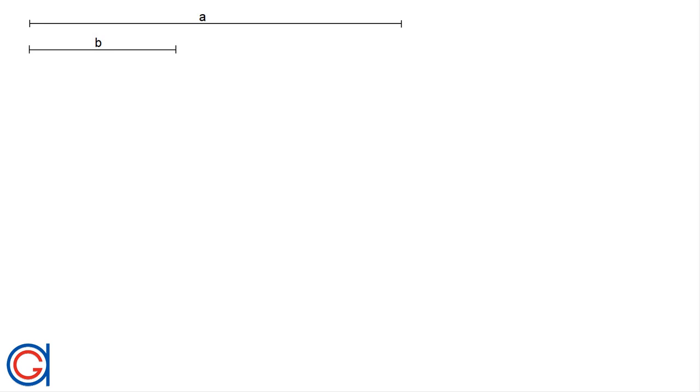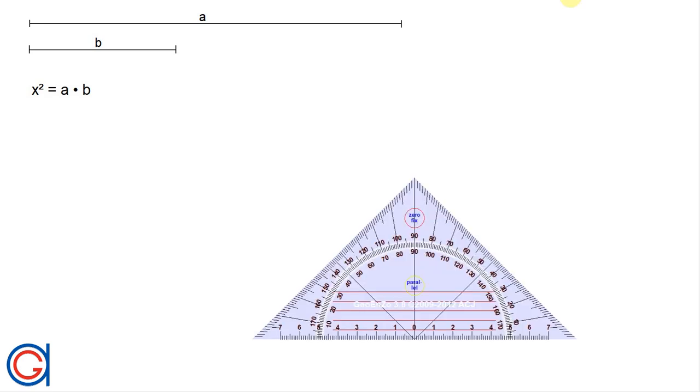I would like to remind you that the geometric mean of two lines A and B is equal to a third line X which satisfies this formula: X squared is equal to A times B, or in other words, X is equal to the square root of A times B.